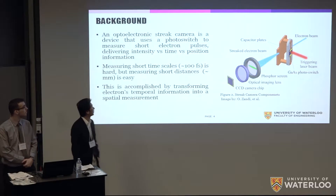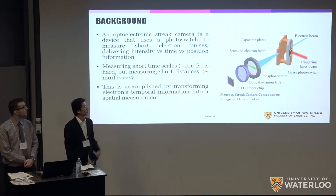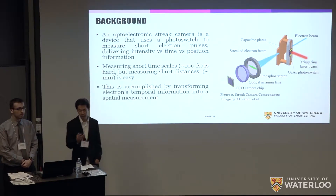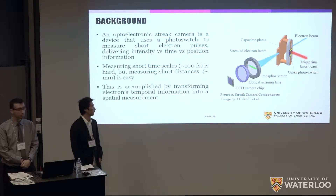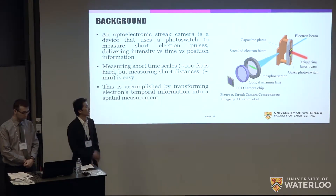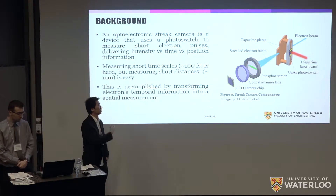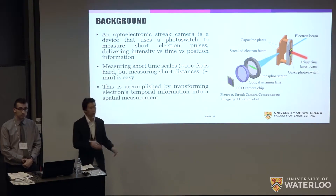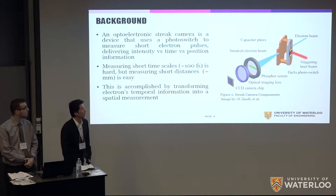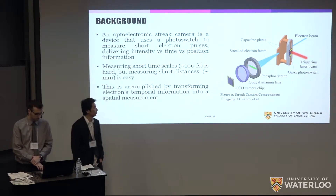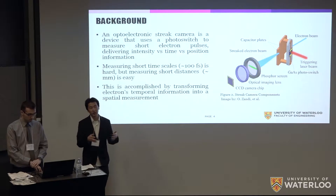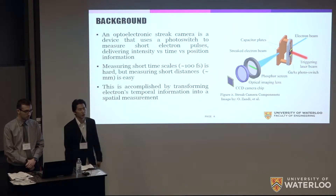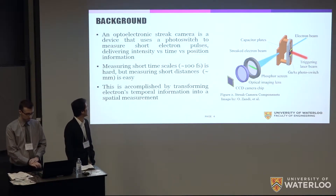I'll go over a little bit about the background of the streak camera. It uses a photoswitch which, once the laser hits the semiconductor, will generate excitons that lower the resistivity of the semiconductor and close the circuit. You get a damped oscillation and a time-varying field. Depending on when the electron beam travels between the two plates, it will be deflected at a different position. So we're taking a very hard-to-measure time measurement and converting it into a spatial measurement, which is a lot easier to do.